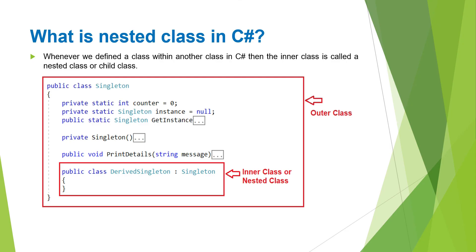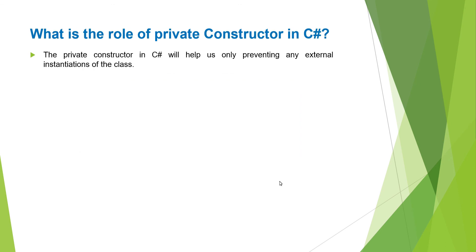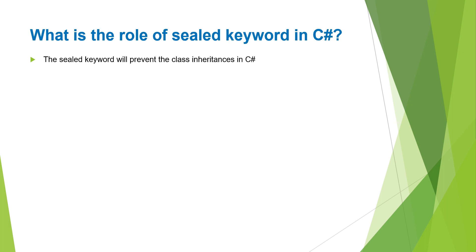What is a nested class in C#? Whenever we define a class within another class, the inner class is called a nested class or child class. In our diagram, the Singleton class is the outer class and DerivedSingleton is the inner/nested class. What is the role of a private constructor in C#? The private constructor only prevents external instantiation of the class. What is the role of the sealed keyword in C#? The sealed keyword prevents class inheritance.